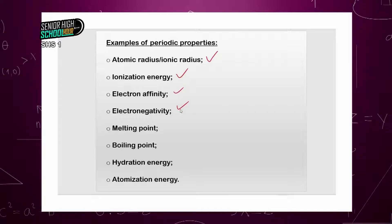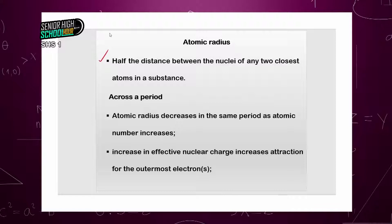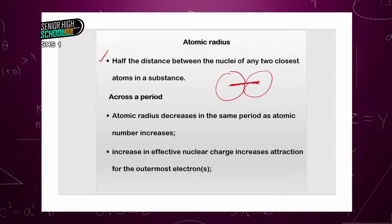So we want to talk about them one after the other. Atomic radius or ionic radius — we know that it is an atom that forms an ion. So for definition, it is half the distance between the nuclei of any two closest atoms in a substance. Half the distance. So if I have two atoms, this is the distance between two closest atoms, and we take half of that — so this half becomes the atomic radius.